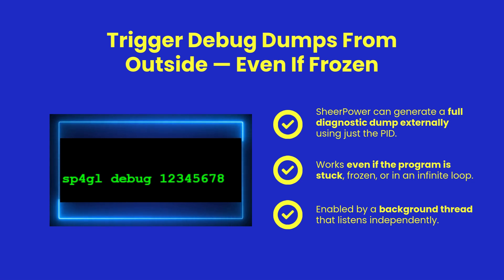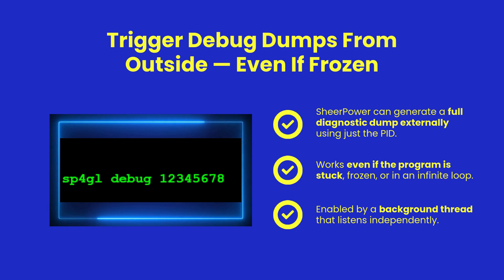What if your program is stuck and can't respond? No problem. ShearPower includes a background listener that responds to external debug commands using the program's PID. You'll get a full snapshot of the program's state, even if it's completely unresponsive.